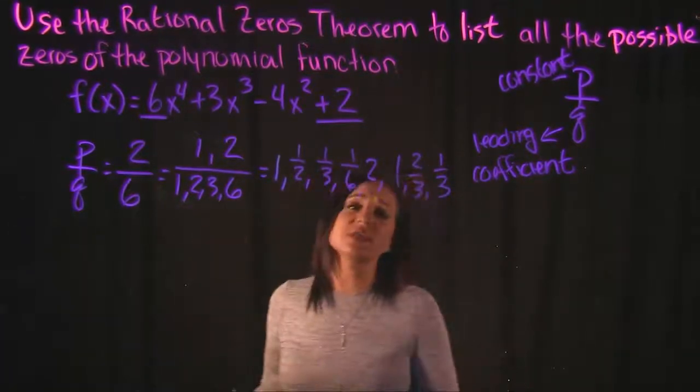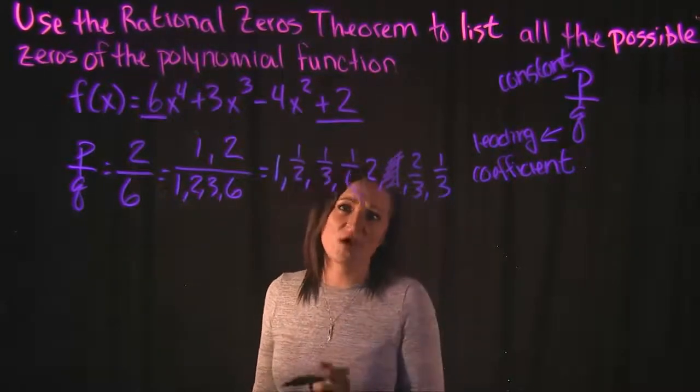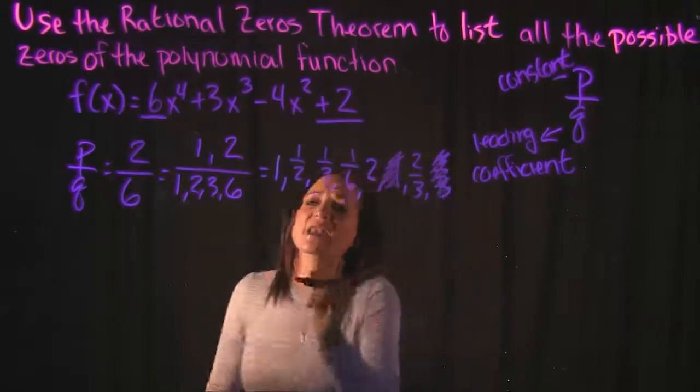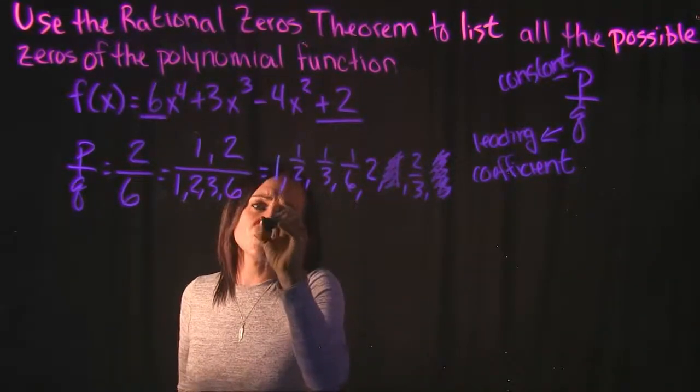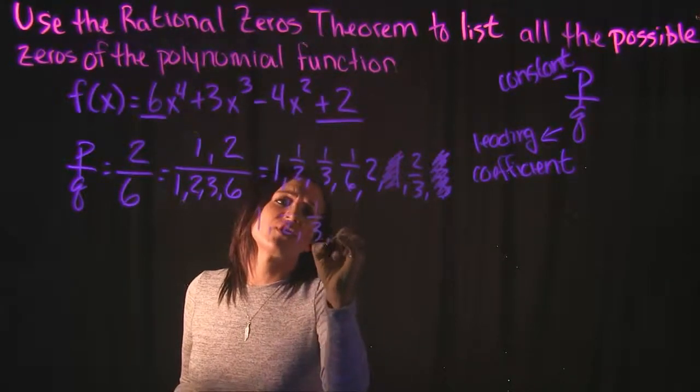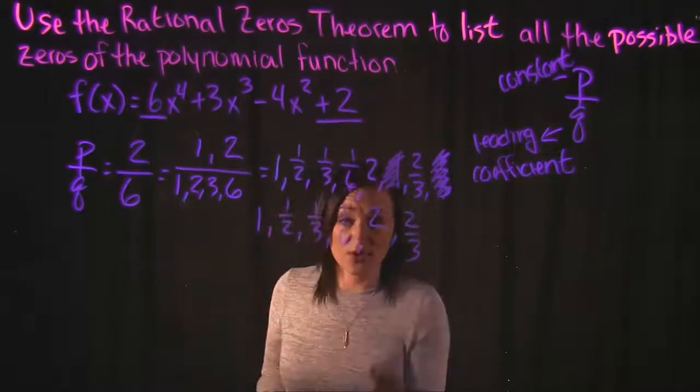So you don't need to list any doubles. So I can see here that 1 was listed twice, so we can mark that one out. We already had 1/3, so we don't need that. So our possible zeros are 1, 1/2, 1/3, 1/6, 2, and then 2/3.